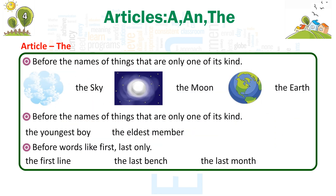We use THE before the names of things that are only one of their kind: the sky, the moon, the earth. Before superlatives: the youngest boy, the eldest member. Before words like first, last, only: the first line, the last bench, the last month.